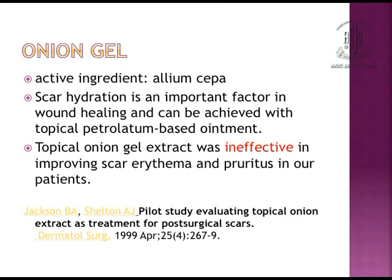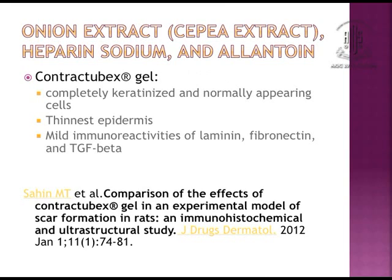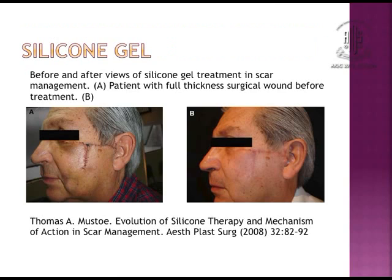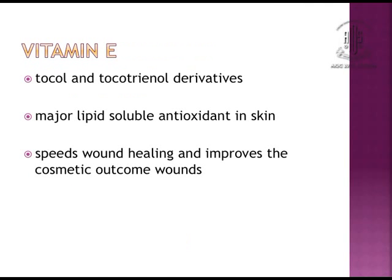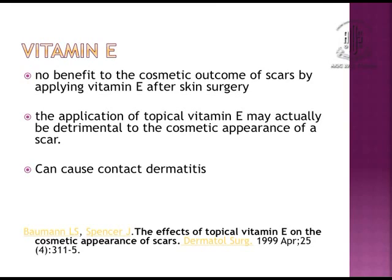Onion gel is also an active ingredient that hydrates the scar, but some authors have said it is ineffective in improving scar erythema and patient complaints of itching. Contractubex is very popular among us to reduce pruritus and the height of the scar. An example showing pre-op and post-op results after silicon gel use is shown here. Vitamin E is a major lipid-soluble antioxidant in skin and helps speed wound healing and improves cosmetic outcomes, though some report no benefit and a risk of contact dermatitis, so further trials are required.